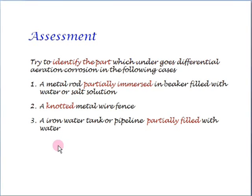Now, in all these cases, you are supposed to identify the part which undergoes corrosion and try to write the reactions for the anodic and the cathodic part and also try to identify the place where the corrosion product may be formed.